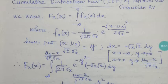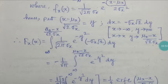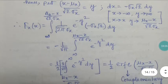After substitution, F_x(x) becomes an integral from minus infinity to (μ_x - x)/(√2 σ_x) of (1/(√(2π) σ_x)) × e^(-y²) times the conversion factor: instead of dx we write √2 σ_x dy. Integrating this out gives minus (1/√π) × integral from infinity to (μ_x - x)/(√2 σ_x) of e^(-y²) dy.